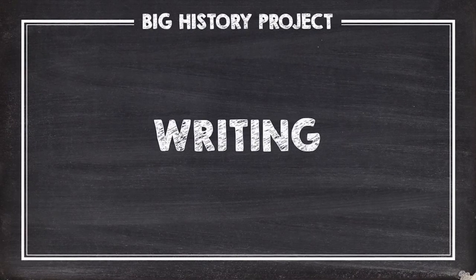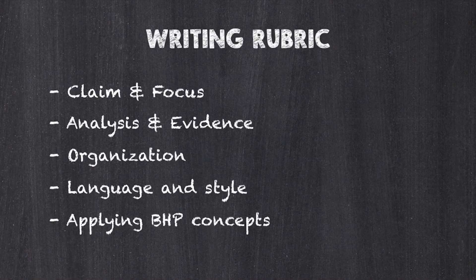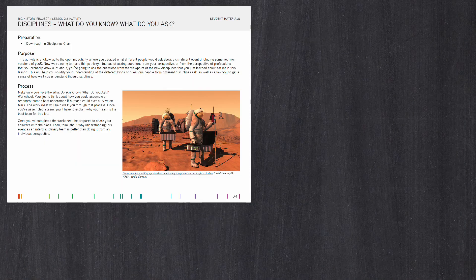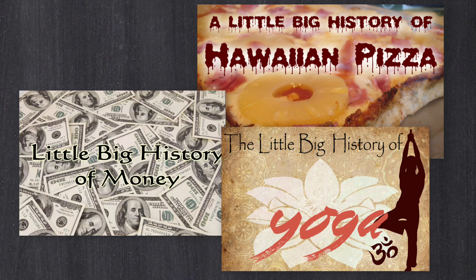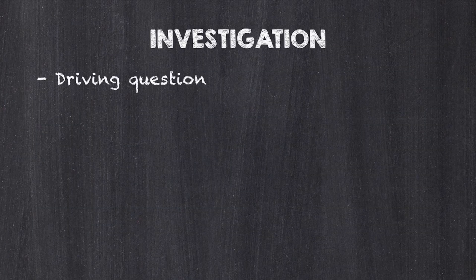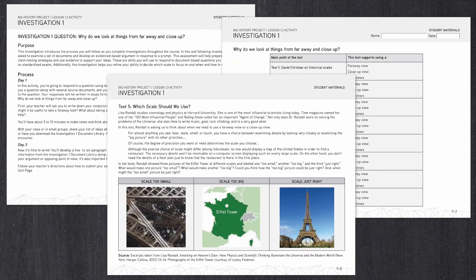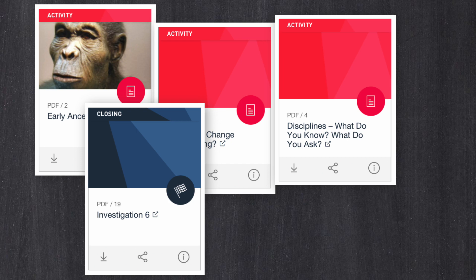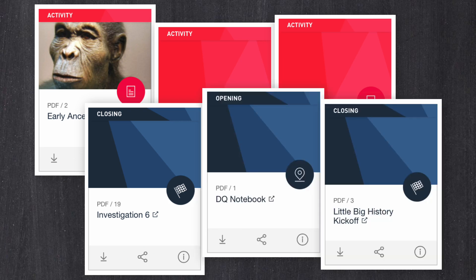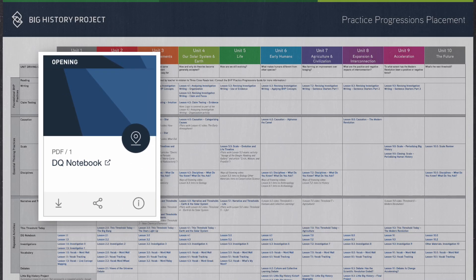Now, let's consider writing. BHP students have opportunities to write both formally and informally through activities, essays, and part of their summative Little Big History project. Each unit also ends with a writing assignment called an investigation. Modeled after document-based question assessments, or DBQs, these assignments mimic the kinds of prompts your students will see on other common performance assessments. Each BHP activity, debate, essay, investigation, opening, and closing is designed to be a formative assessment. Many of these activities repeat over the course of the year, so students will become accustomed to exactly what they have to do and how their work will be measured.